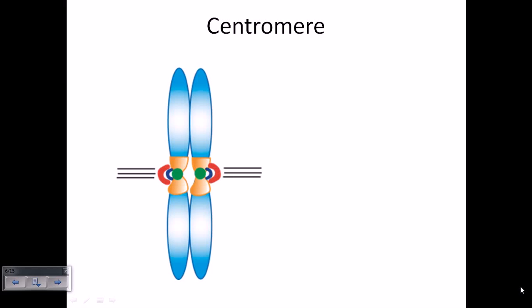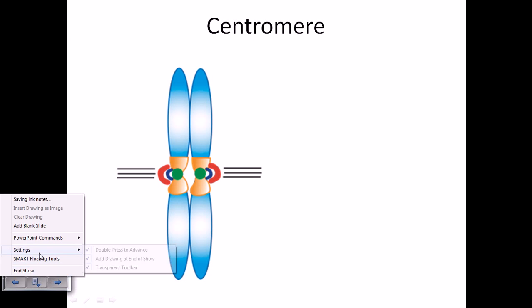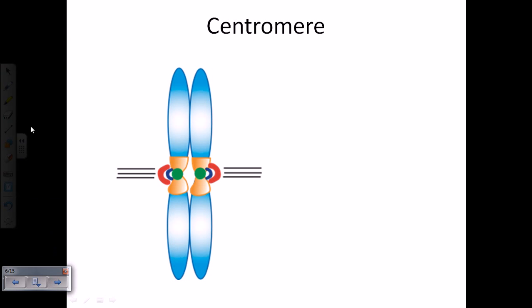Hello friends, let's talk about centromere a little bit more. Centromere is one of the most important parts in the organization of eukaryotic chromosomes. As the term suggests, it is present in the center of the eukaryotic chromosome.